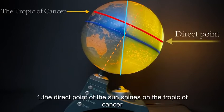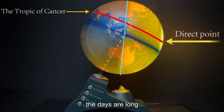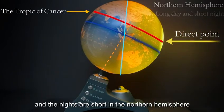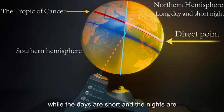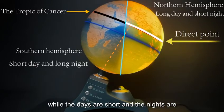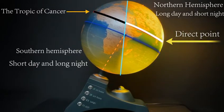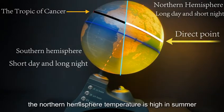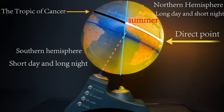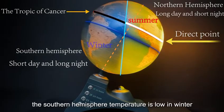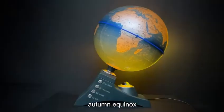Summer Solstice: The direct point of the Sun shines on the Tropic of Cancer. The days are long and the nights are short in the northern hemisphere, while the days are short and the nights are long in the southern hemisphere. The northern hemisphere temperature is high in summer, while the southern hemisphere temperature is low in winter.